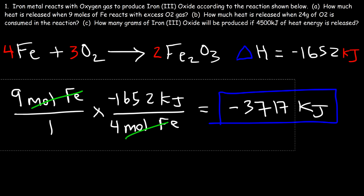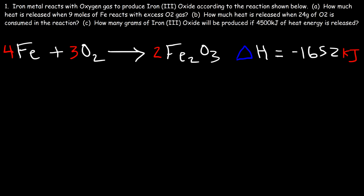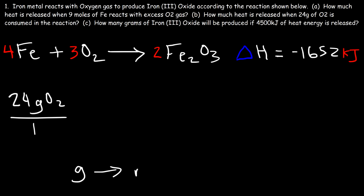Now let's move on to Part B: how much heat is released when 24 grams of O2 is consumed in the reaction? We start with 24 grams of O2. When given a mass, we need to convert grams to moles using the molar mass from the periodic table, and then use the thermochemical equation to convert moles to kilojoules.